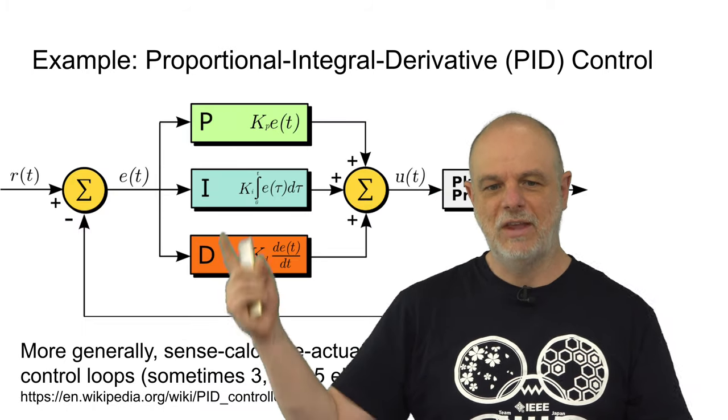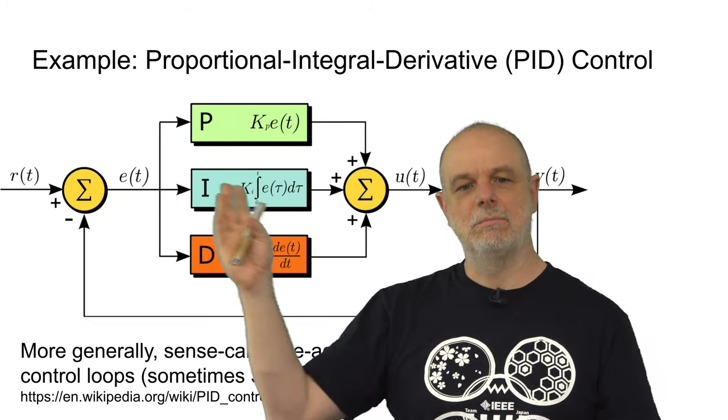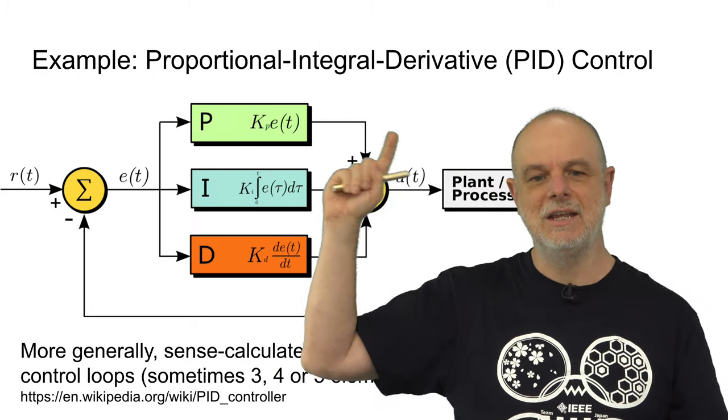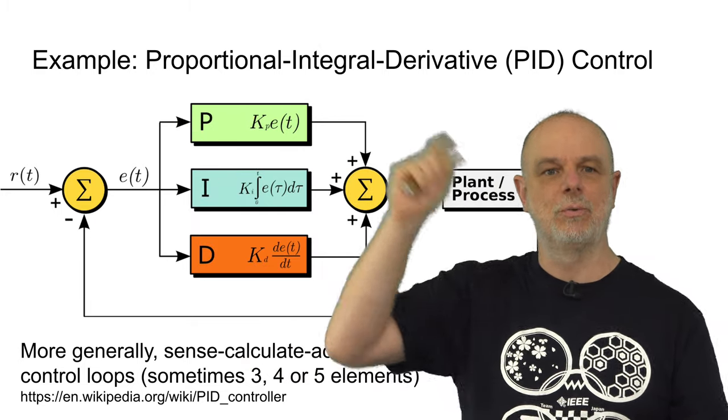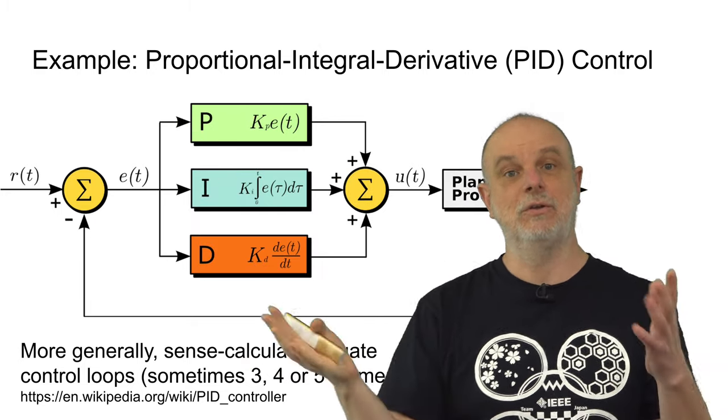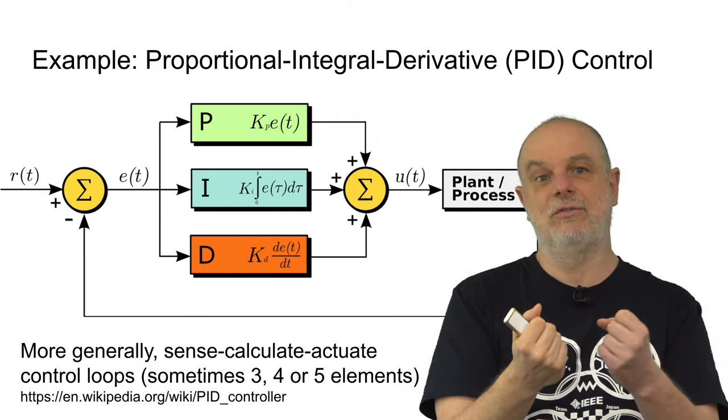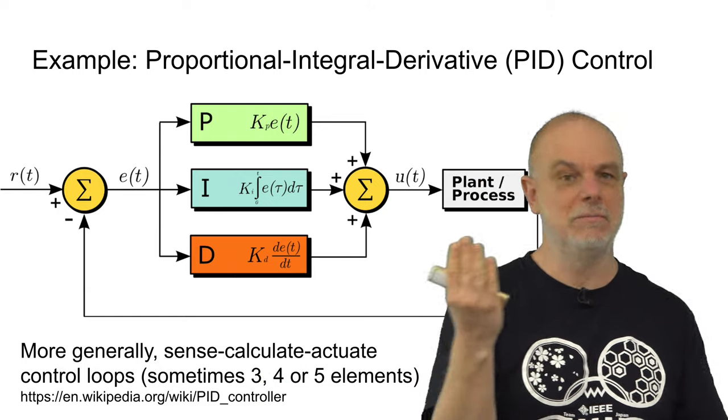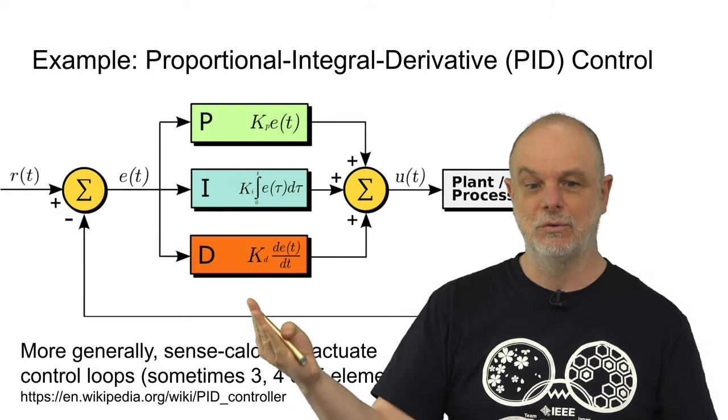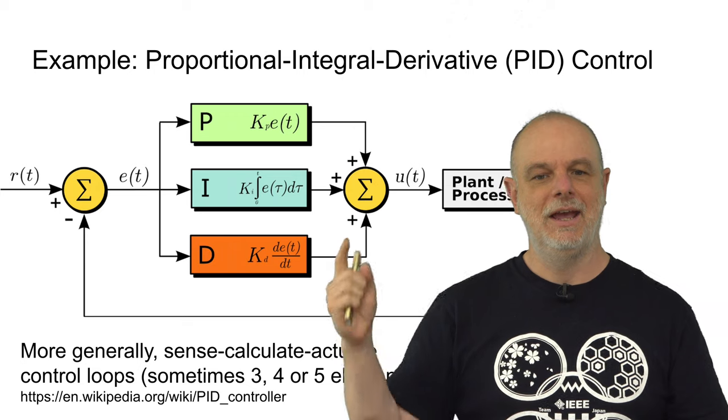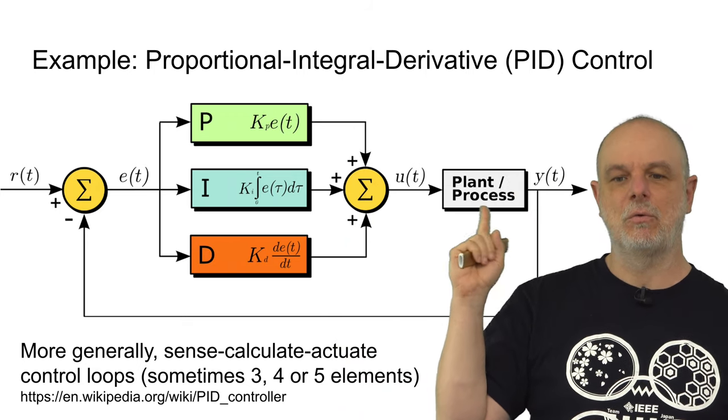So, for example, this is a modern system, a modern approach called a PID, a proportional integral derivative kind of device. And what does it do? Well, it's controlling, for example, a factory, or it might be controlling part of your airplane, or any of those kinds of things. And that happens over here on the right, where we're changing the system itself.